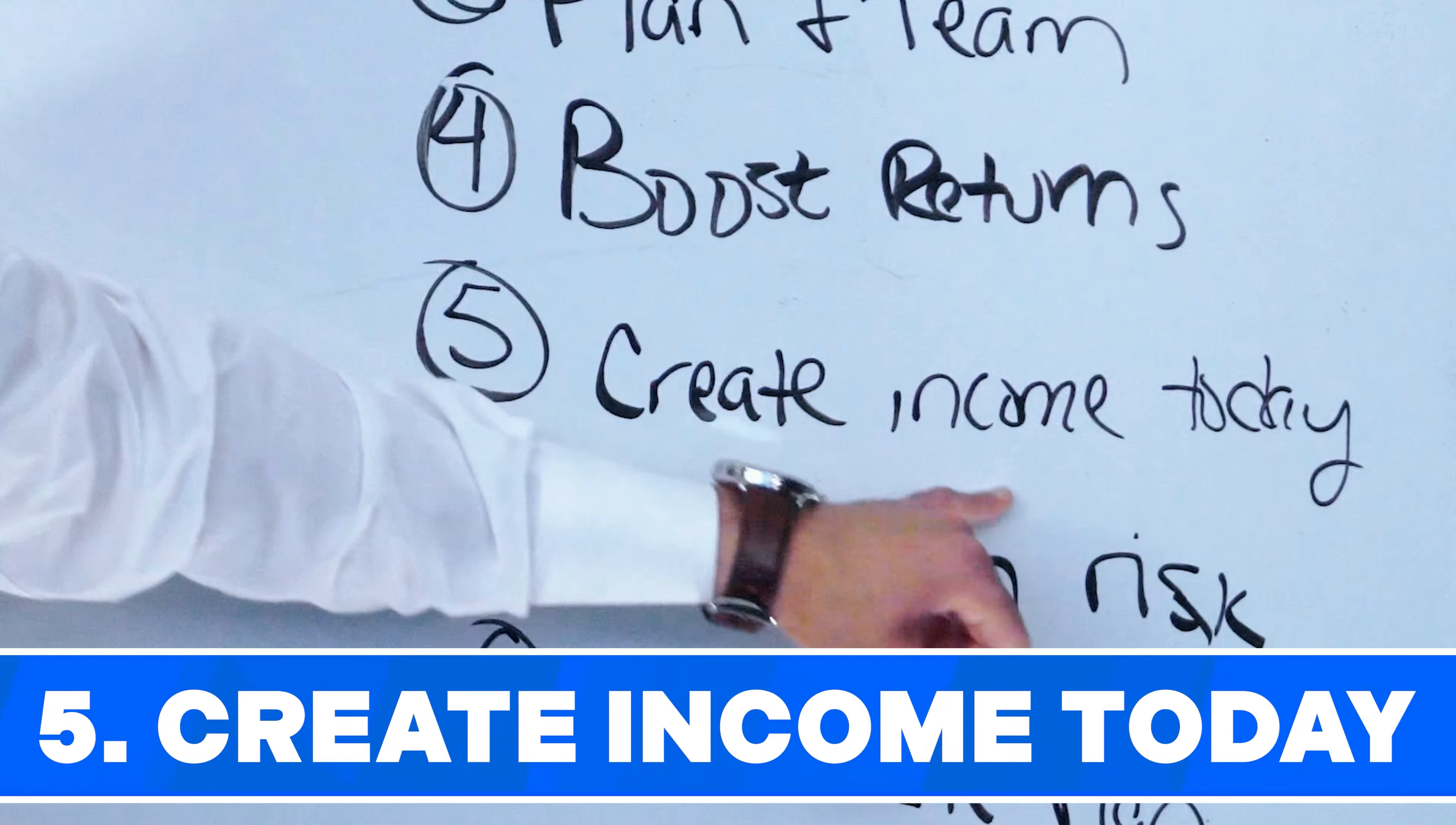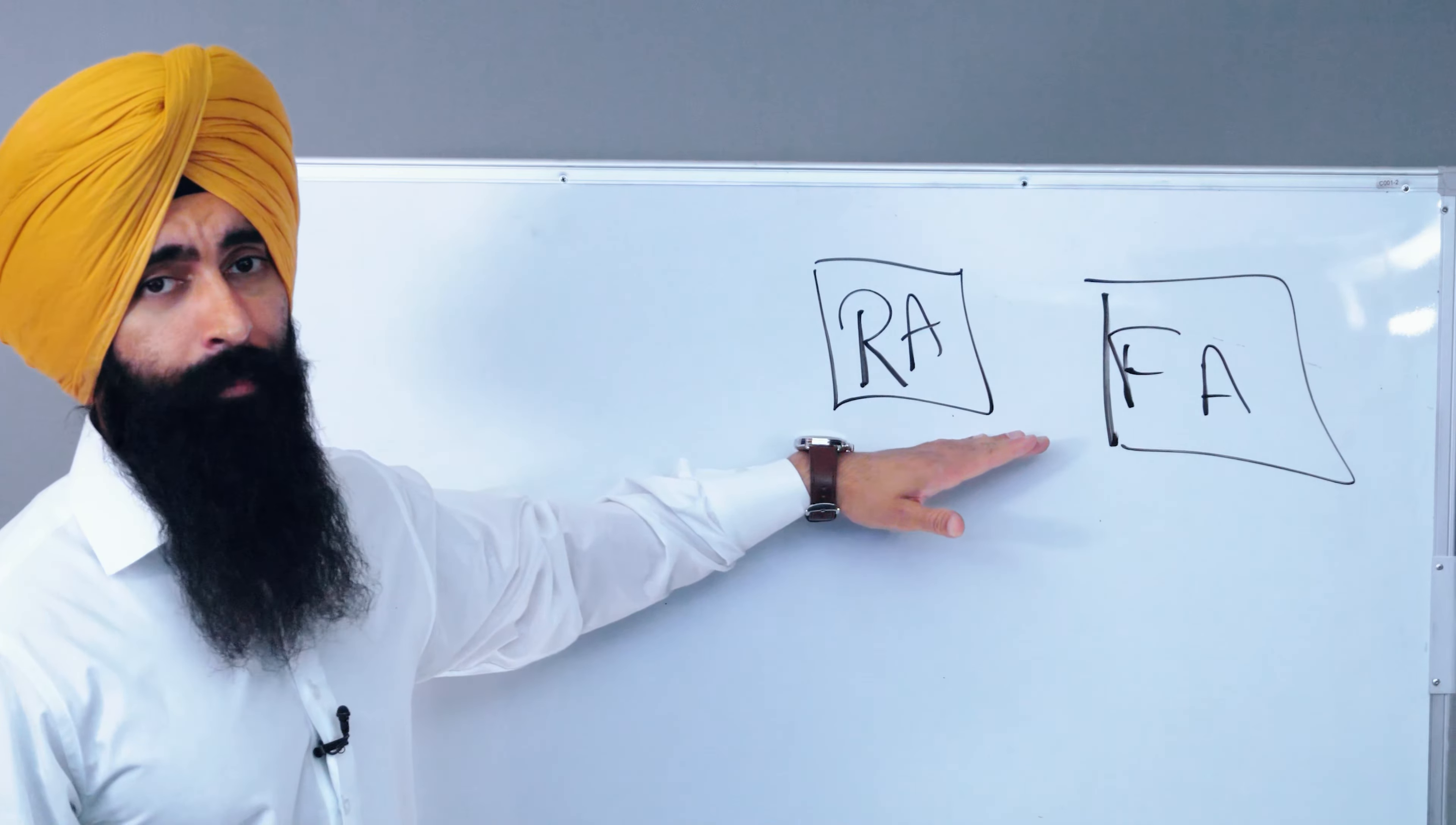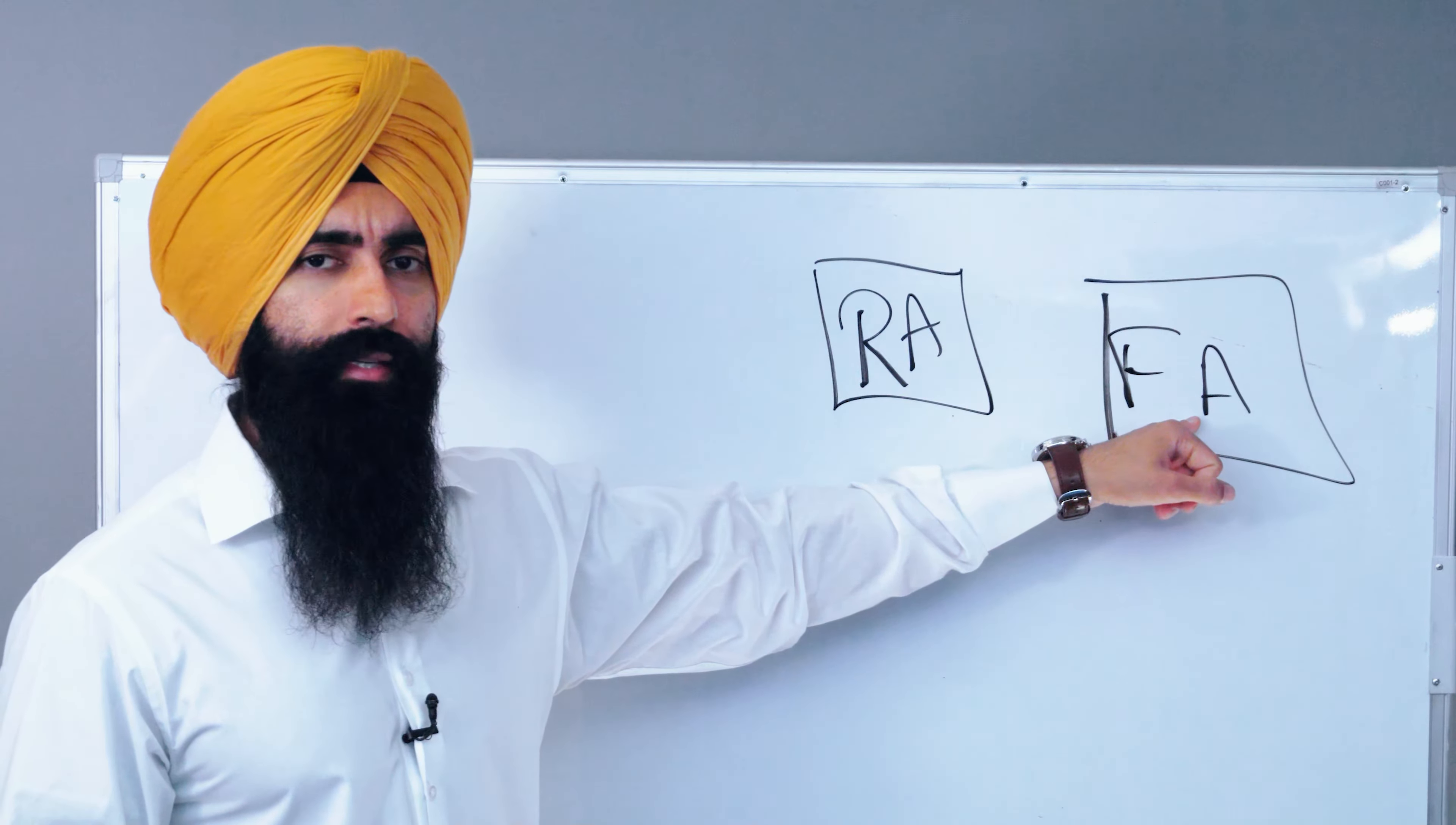Number five, how can you create income today? If you have two different types of investment vehicles working for you, you have your retirement account - this is your 401k, your IRA. You can't touch this until you enter retirement age. But then you also create these freedom accounts. This is your own self-managed stock market accounts, your own self-managed real estate. You can start tapping into this whenever you want.